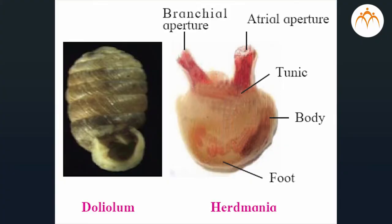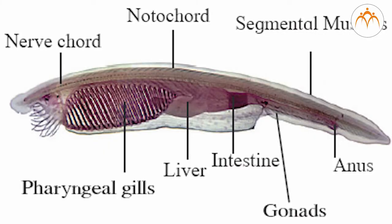Subphylum Urochordata: these are marine animals whose body is covered by a skin-like test or tunic. Larvae of these animals are freely swimming and notochord is present only in the tail region of larvae, hence they are called Urochordata. Larvae metamorphose into adults after settling down at the bottom of the sea. Generally these animals are hermaphrodite. Examples: Herdmania, Doliolum, Ascidia, etc.